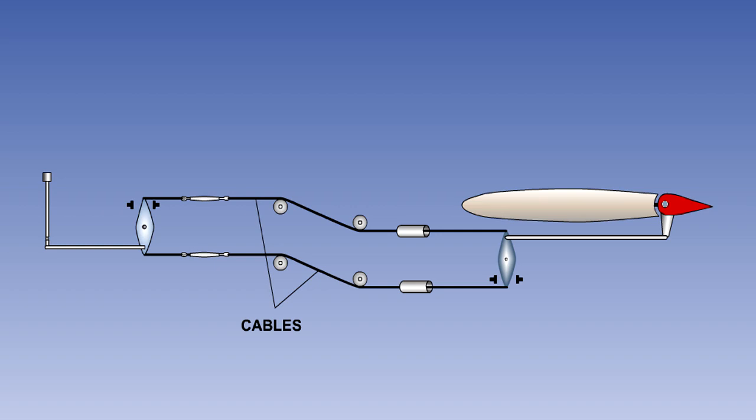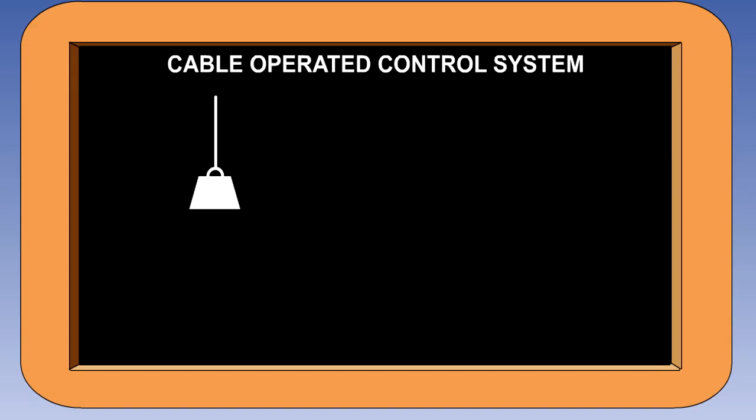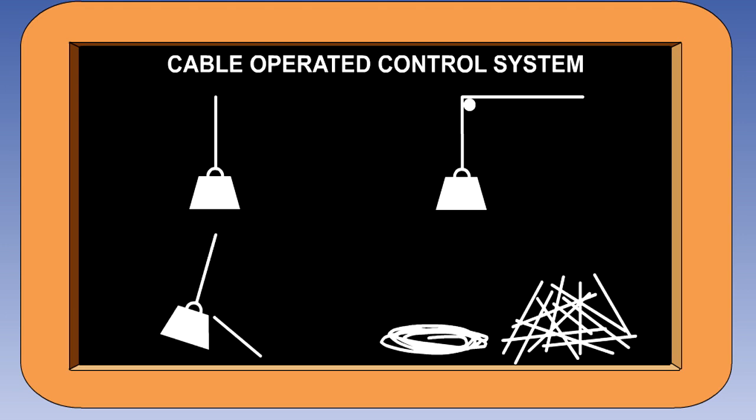Most manual control systems use flexible wire cables to transmit the movement from the pilot's control to the control surface. Cables have a number of advantages over push-pull rod type linkages. They have a very good strength to weight ratio. They are easy to route through the aircraft. Their direction can be easily changed using pulleys. Because of their flexibility, they are resistant to impact damage and they take up less room and have fewer joints than systems using solid rods.